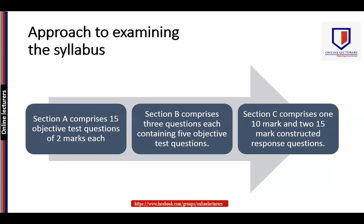There are three sections in this paper. Section A comprises 15 objective test questions of two marks each, making Section A worth 30 marks in total. These questions will be drawn from the whole syllabus — any topic such as IHT, income tax, or corporation tax can be tested here.